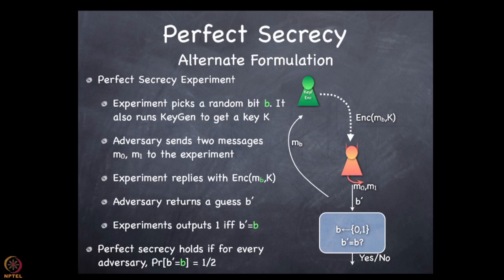Any questions on this? We are allowing the adversary to pick any two messages of its choice. The security definition says for every adversary — in particular every choice of M0, M1 — the advantage should be 0. So whether you encrypted M0 or M1, the ciphertext distribution should look the same. Otherwise an adversary can get some advantage. A really bad idea for the adversary would be to pick M0 and M1 to be the same message, because then obviously the ciphertext is distributed the same way. Intuitively the adversary is trying to find two very different messages which should show up differently in the ciphertext, but hopefully our scheme will produce the same distribution of ciphertext.